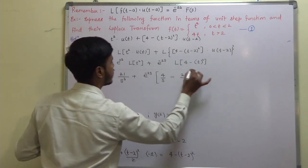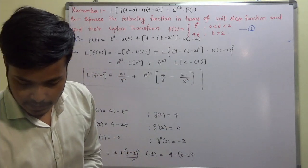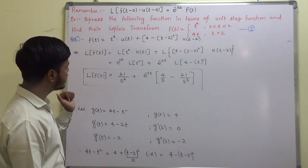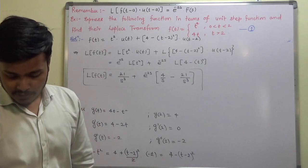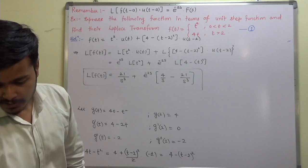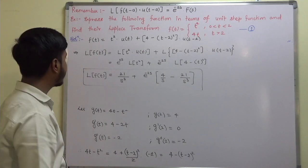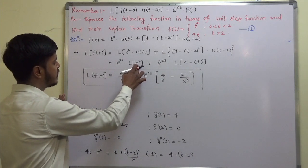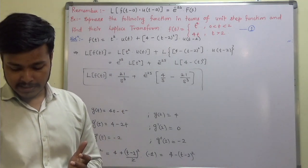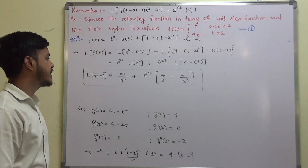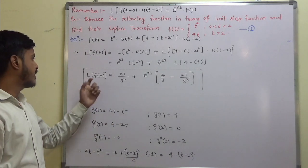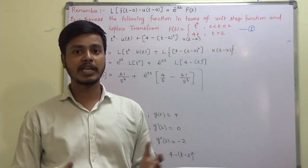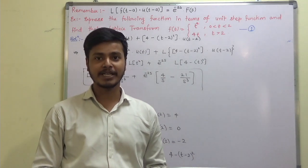So this is done now. The answer is 2/s³ plus e^(-2s) · [4/s minus 2/s³]. So f(t) gives this Laplace transform. I hope the problems I have taken are clear to you. Thank you for watching this learning video and enjoy learning mathematics. Thank you.